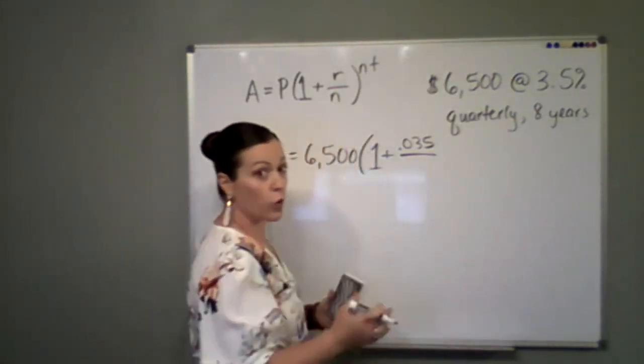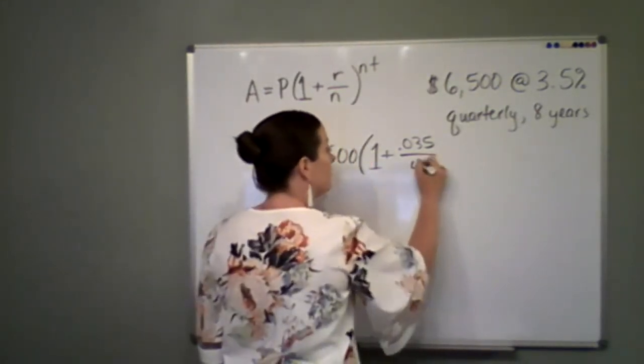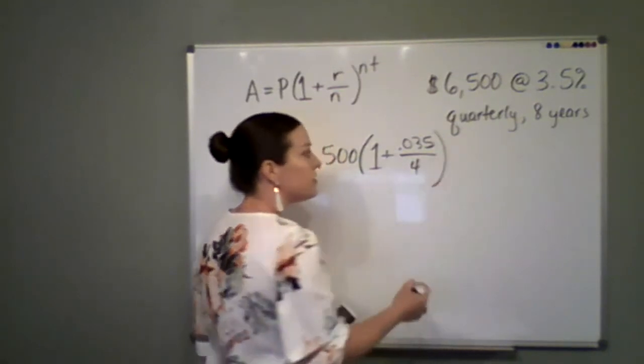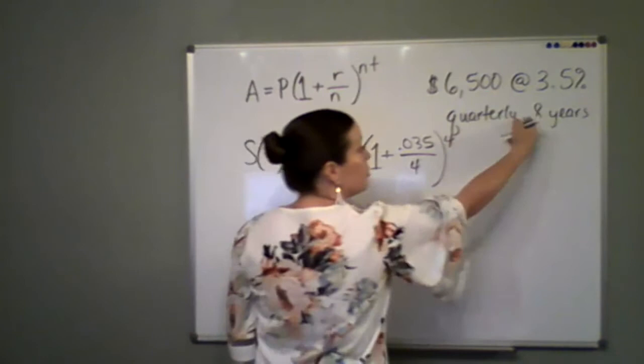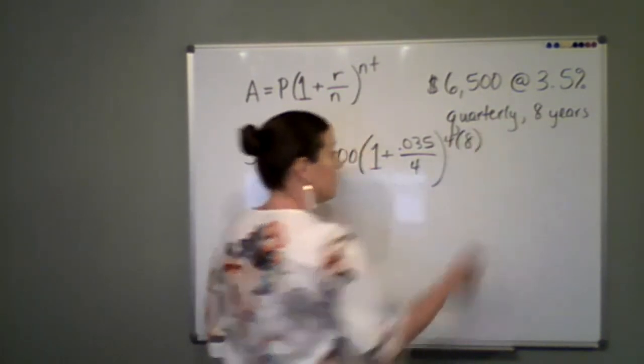Well, if it's quarterly, quarter four, there are four of them in a year. And then I take how many times it's calculated in a year and multiply it by the number of years.